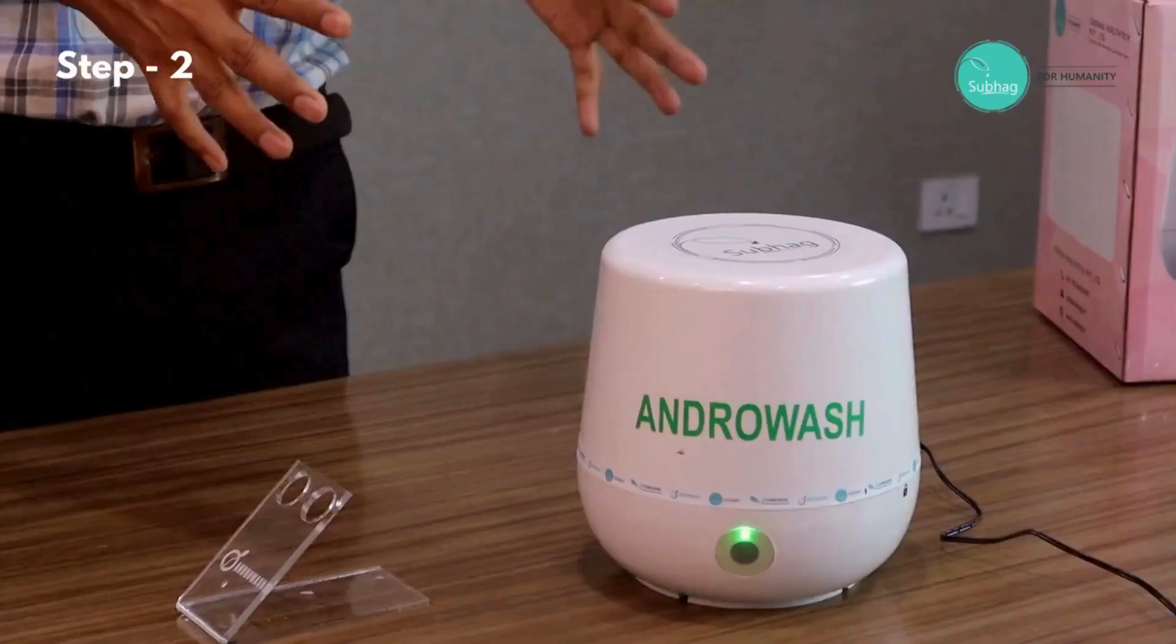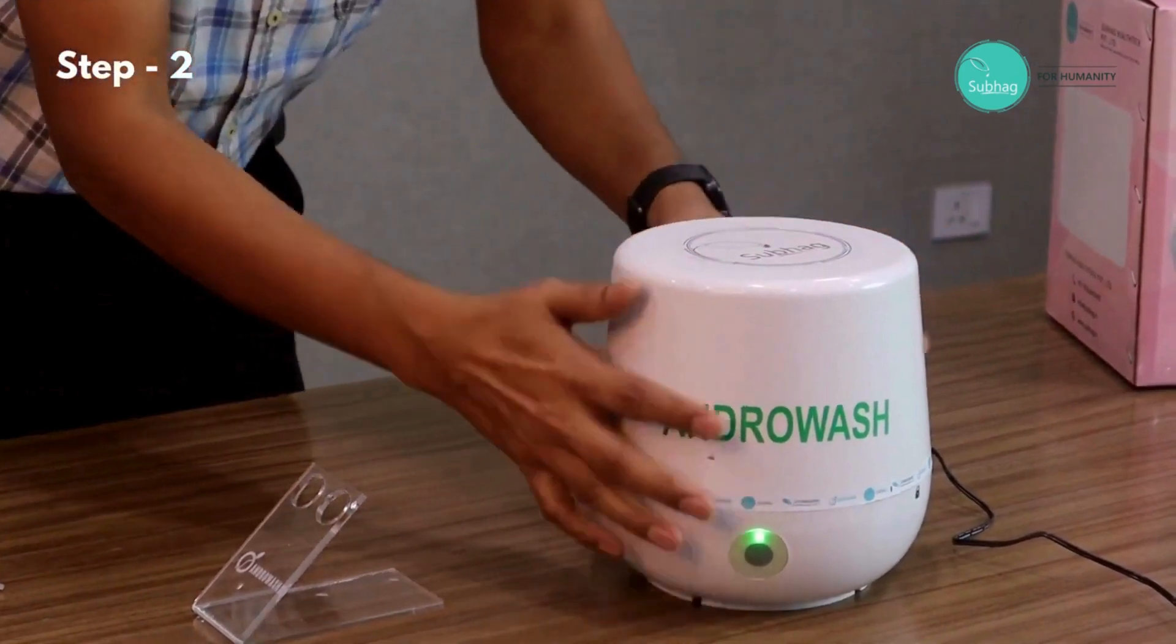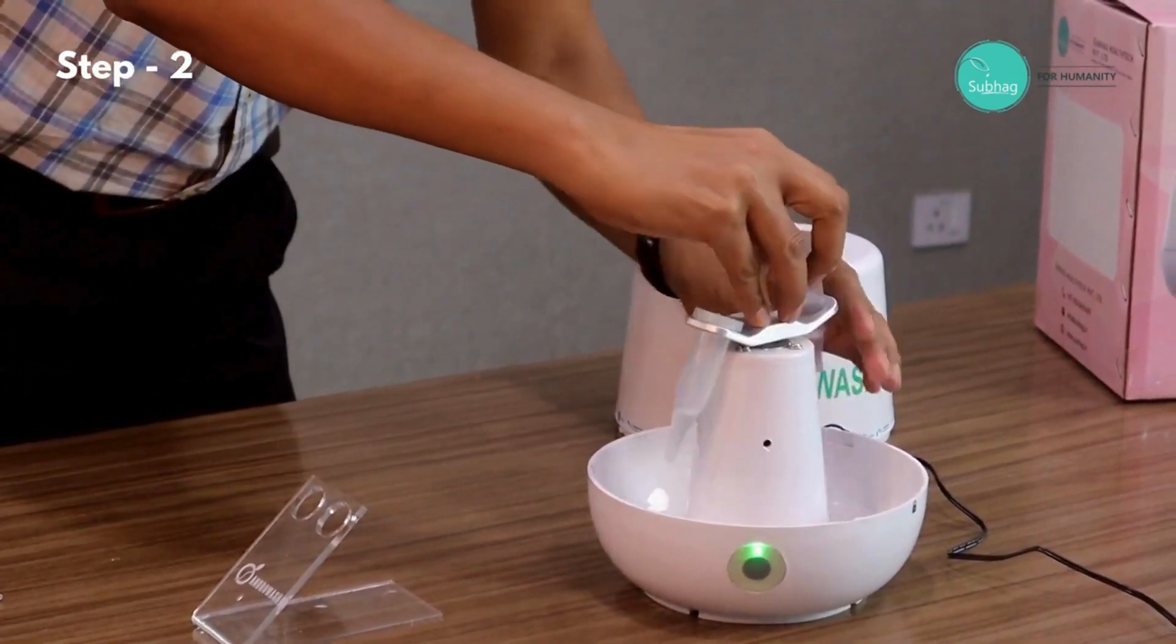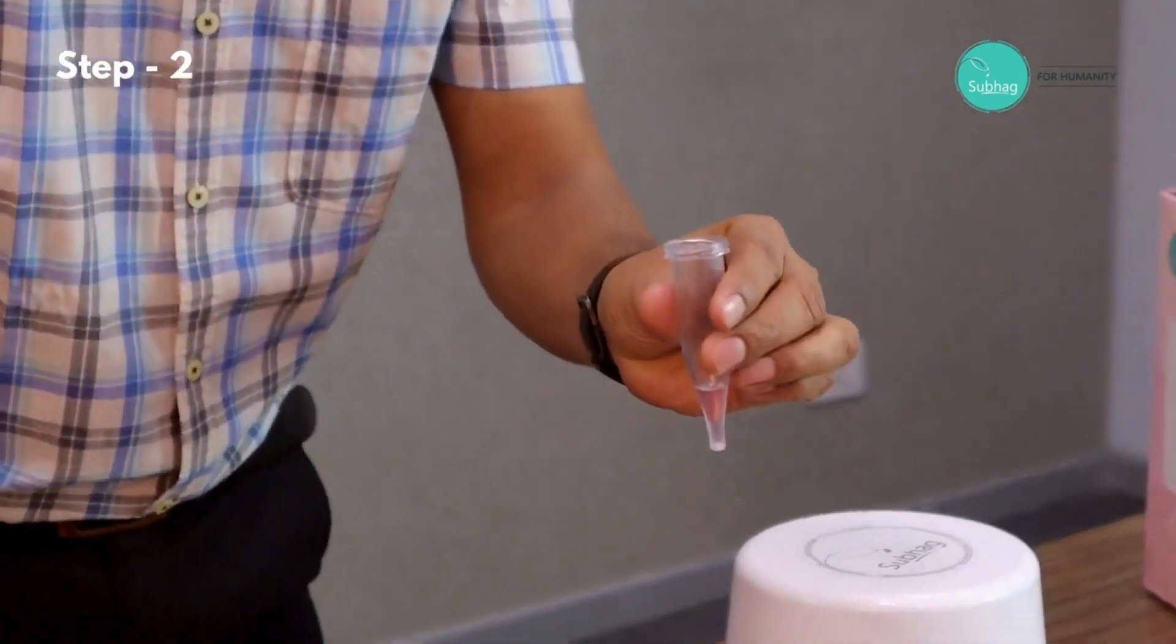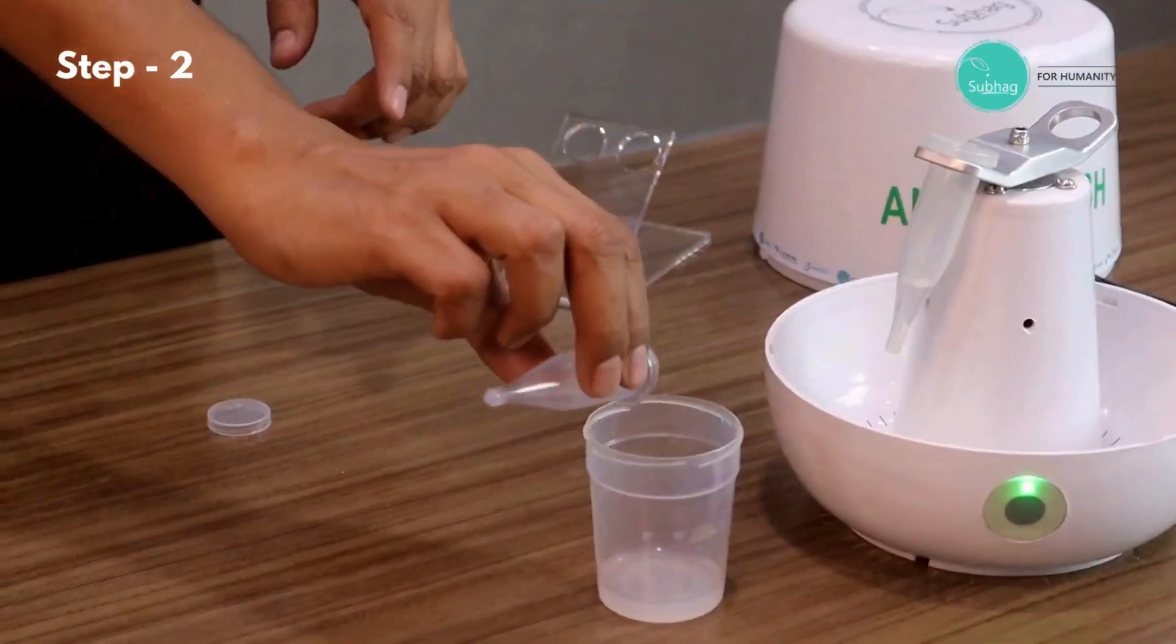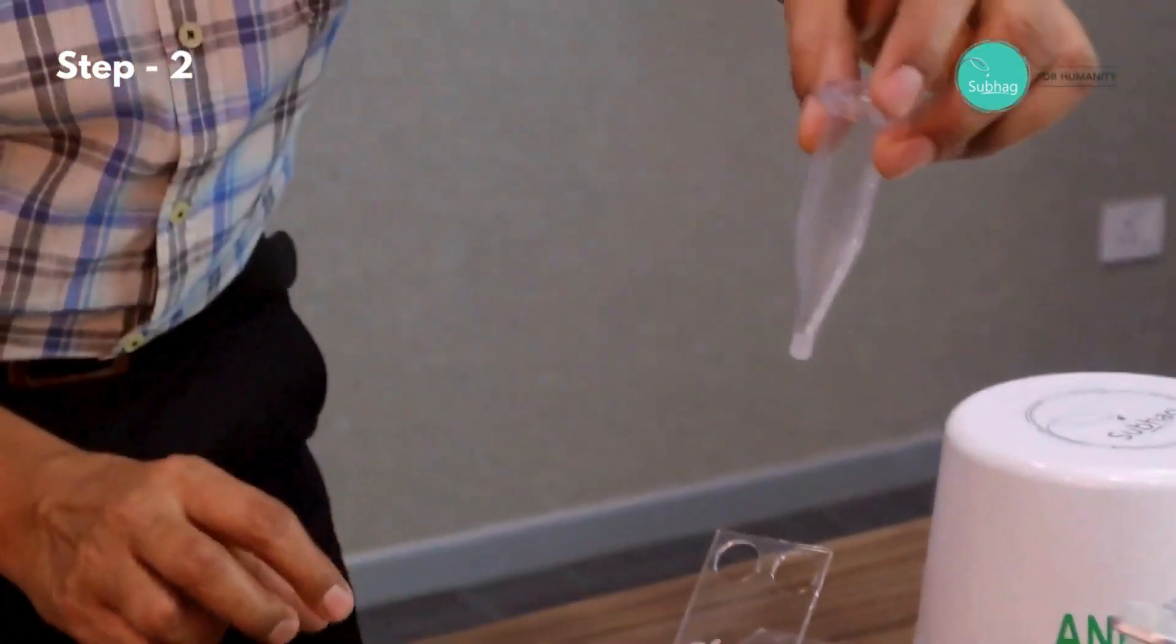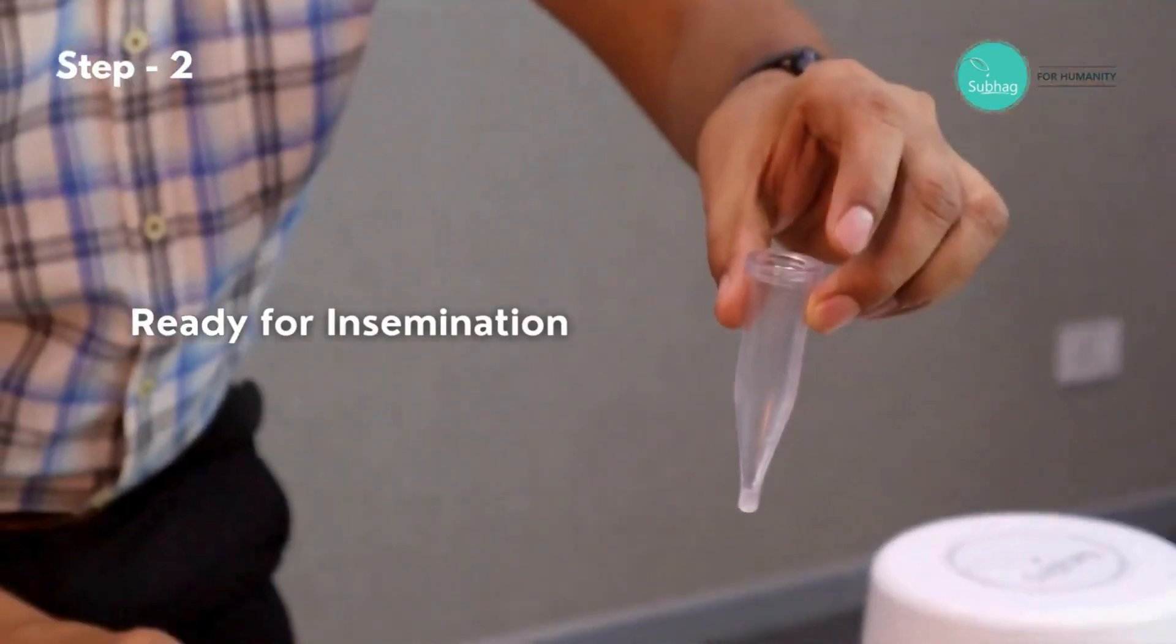Now this second stage washing is complete. We will remove the cap and then take the tube with the semen sample. Now we need to simply discard the supernatant just by tilting the tube like this, and we can simply discard this.